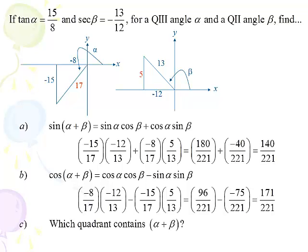Now we ask what quadrant does alpha plus beta reside in. We have a positive sine and a positive cosine, so that must be quadrant 1 — the only quadrant with both positive. We can also find the tangent of alpha plus beta as sine over cosine: multiply by the reciprocal of the denominator and you get 140 over 171. We don't need the full tangent addition formula; we can just divide sine by cosine.